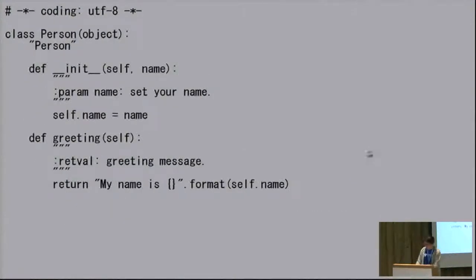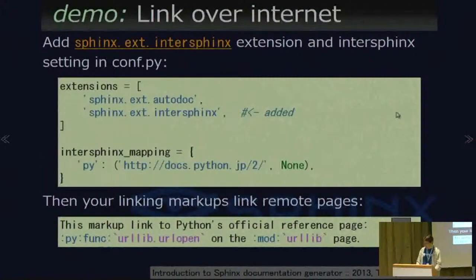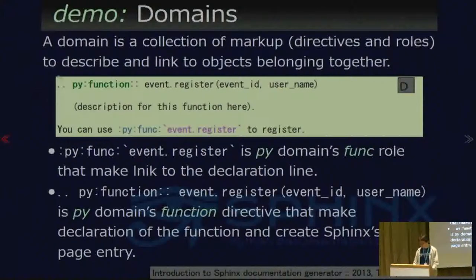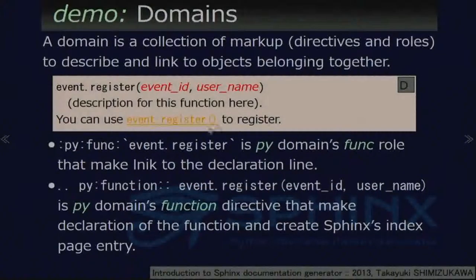This is a Person.py file. Sphinx parses this code and its docstrings and renders it into Sphinx documentation like this. And linking over the internet — a domain is a collection of markup to describe and link to objects that belong together. The py:function directive defines a function's signature and description, and you can use the py:func cross-reference role with the function name. This renders as an API reference.